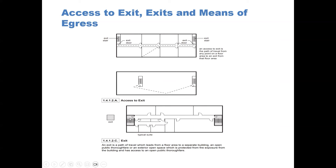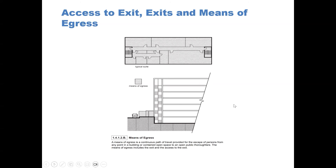It could be an exterior door if this was at grade. And then finally, means of egress is all of it — from any point all the way to the outdoors, down that stairwell and all the way to the outdoors. That's the means of egress, which includes the exit and access to exit.